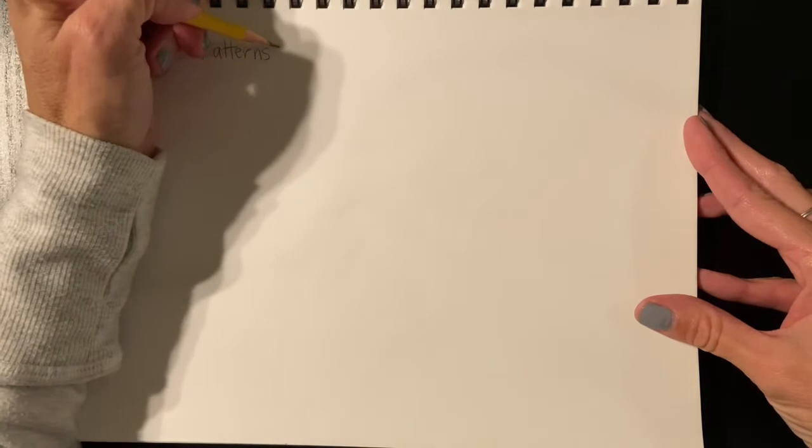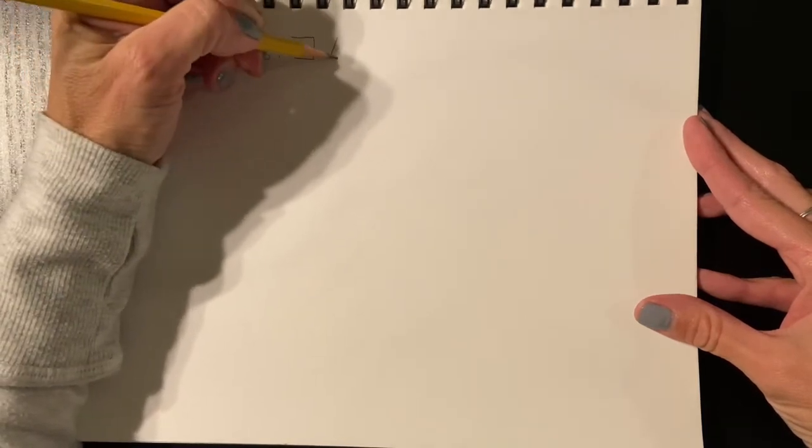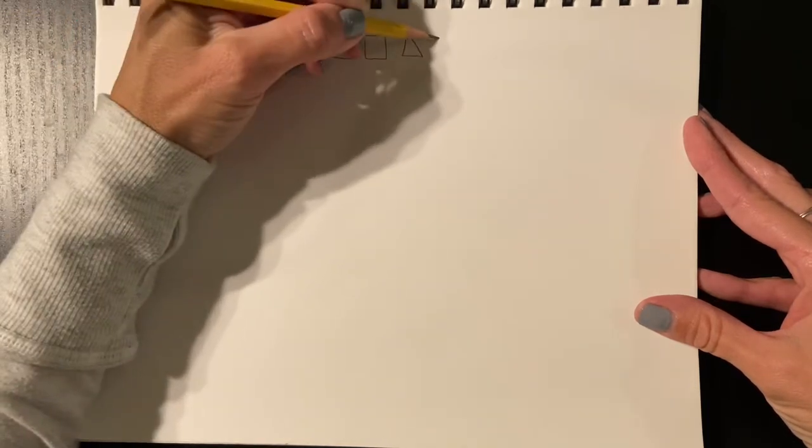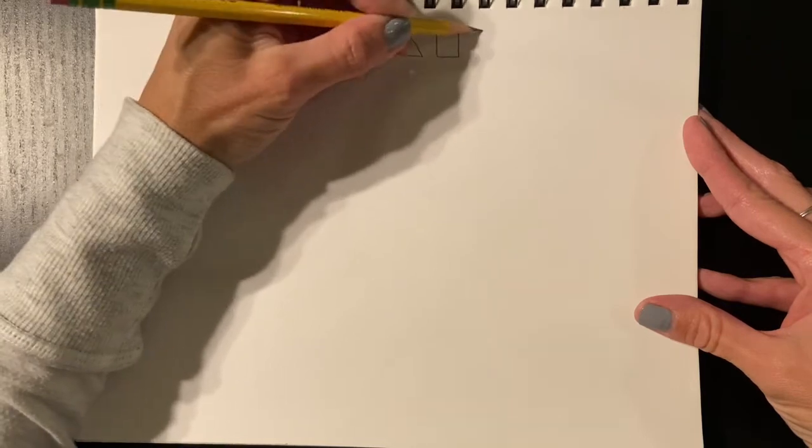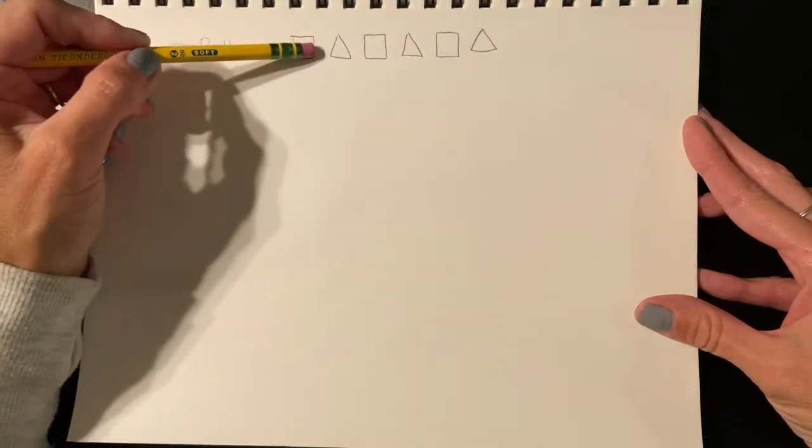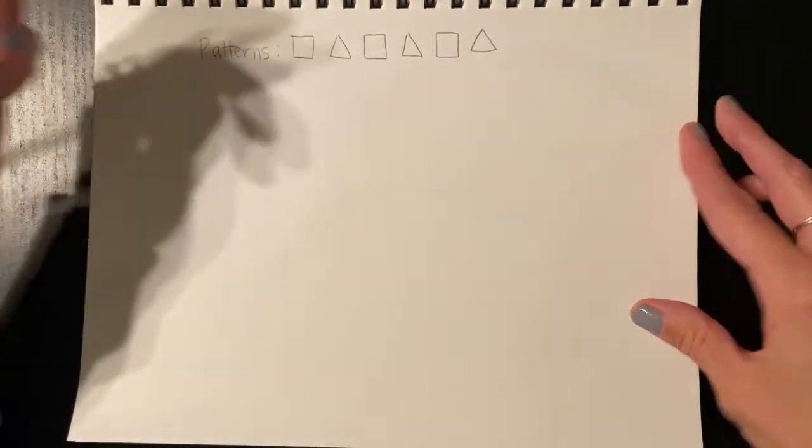I'm going to do a square, triangle, square, triangle, square, triangle. So I have the same shapes repeated—square, triangle, square, triangle—and it keeps going back and forth. That's a simple pattern.